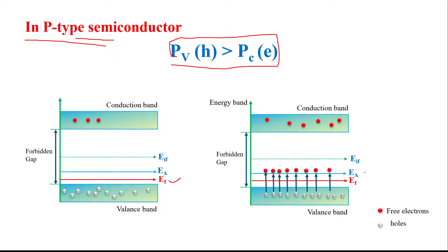In the energy band diagram of P-type semiconductor material, an acceptor energy level exists near the valence band. This acceptor energy level is ready to accept a large number of electrons. We know that the valence band is filled with valence electrons. When we give external energy from an external supply to the semiconductor material, these valence electrons absorb this energy and jump into the next higher level, which is the acceptor energy level.